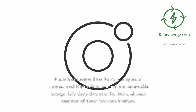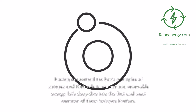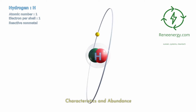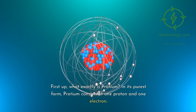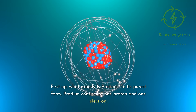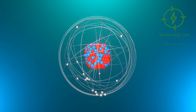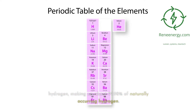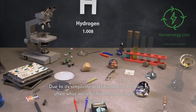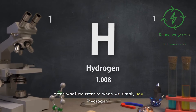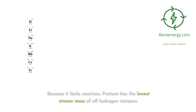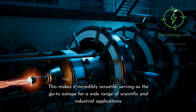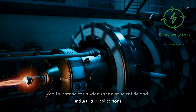Protium Unveiled. Having understood the basic principles of isotopes and their role in science and renewable energy, let's deep dive into the first and most common isotope: protium. In its purest form, protium consists of one proton and one electron. It's the simplest, most abundant isotope of hydrogen, making up about 99.98% of naturally occurring hydrogen. Because it lacks neutrons, protium has the lowest atomic mass of all hydrogen isotopes, making it incredibly versatile for a wide range of scientific and industrial applications.